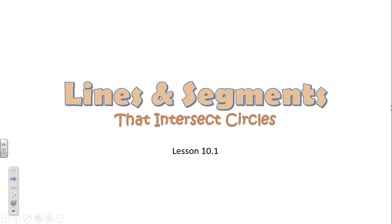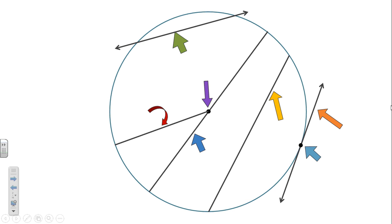First of all, your one definition is that a segment whose endpoints are the center and any point on the circle is called the radius. And you've used radius before. The plural of radius is radii, meaning more than one radius.